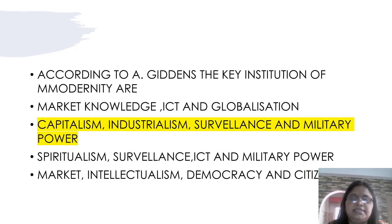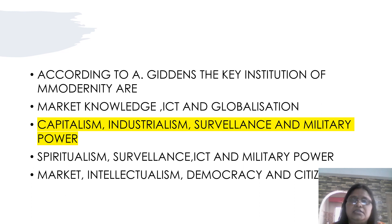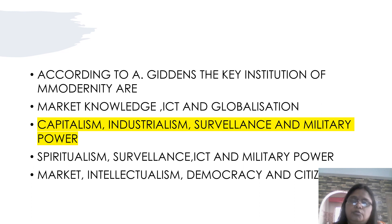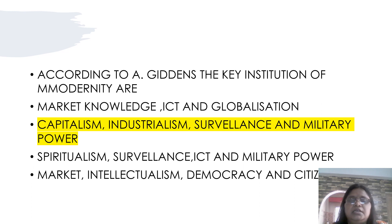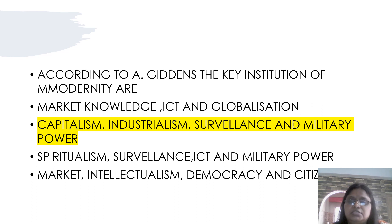According to Giddens, the key institutions of modernity are: Capitalism, Industrialism, Surveillance, and Military Power. This is the institution of modernity — this is the main key point.